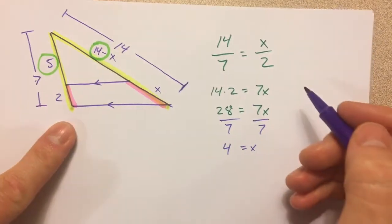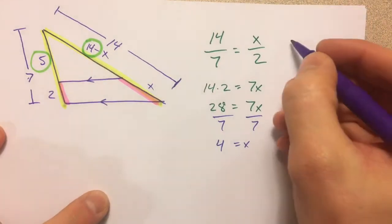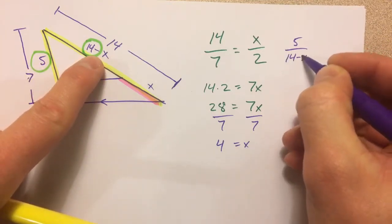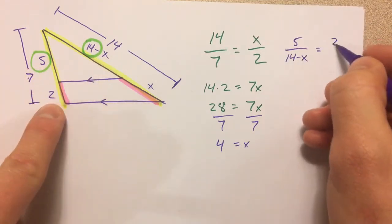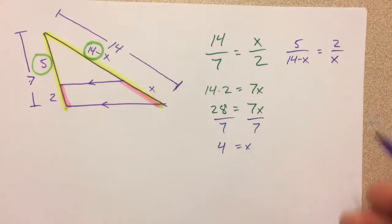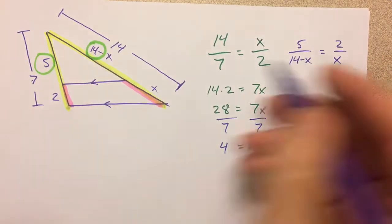And so I could write a second proportion here that is 5 compared to 14 minus x, and the 2 compared to the x. And so when you're setting up your proportion, just make sure that you take your time and set up a good one. Don't compare things that aren't related.